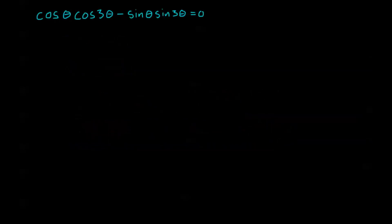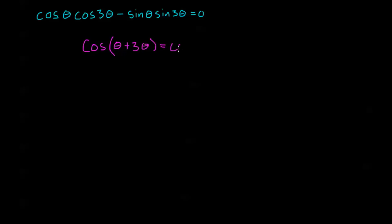Let's take a look at problem number 2: cosine of θ times cosine of 3θ minus sine of θ times sine of 3θ equals 0. When you see a problem like this, this should scream at you: addition-subtraction formulas. We need to identify which identity this is. This is the addition identity for cosine, so this is the same as cosine of (θ + 3θ), which is cosine of 4θ, still equal to 0.